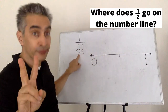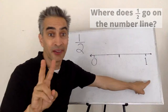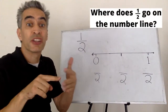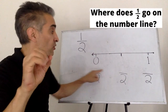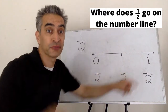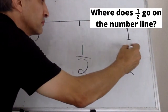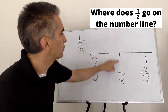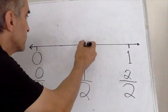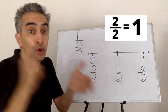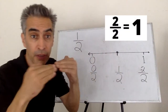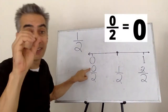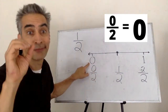Now we're going to write the denominator two right here, here, and here. Now we're going to start counting: zero, one, two. One-half goes right there. Notice that two-halves equals one. Notice that zero-halves equals zero.